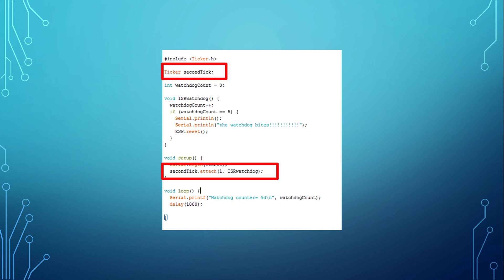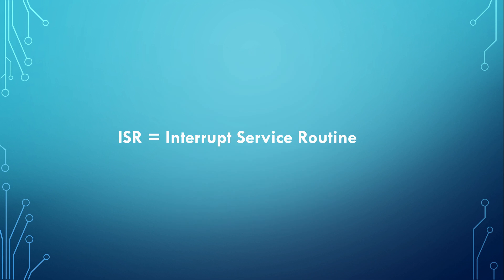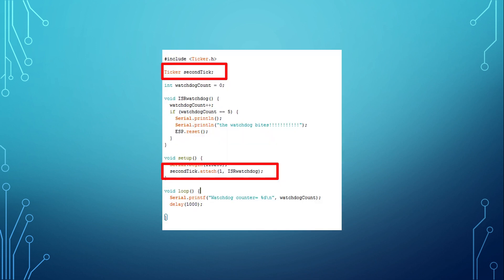Here is the example sketch. We use a library called Ticker. We initialize a Ticker with the name second_tick and attach the subroutine ISR_watchdog. ISR stands for interrupt service routine — this name is used to show that this is not an ordinary subroutine; it will never be called by our sketch. These two lines of code make the subroutine ISR_watchdog execute every second.